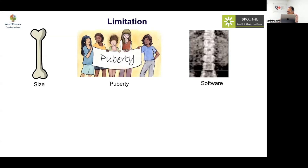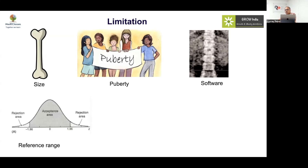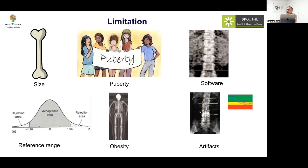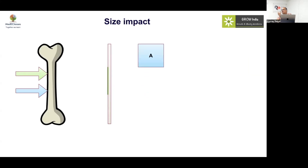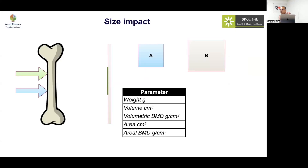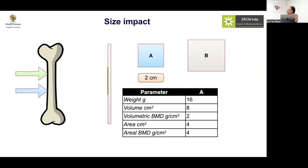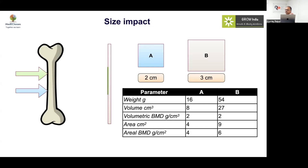Limitations of DEXA include: size affects aerial bone density, puberty status, software type (adult vs. pediatric), reference database (local or not), obesity, and artifacts. The most important limitation is size. DEXA produces a two-dimensional projection of a three-dimensional object. Two boxes A and B with the same volumetric density will appear to have different aerial BMD if they are different sizes — a larger bone will falsely appear denser.